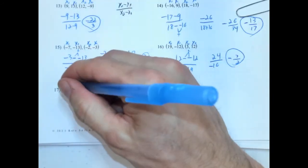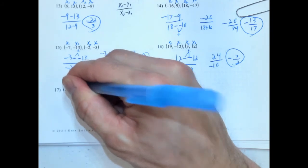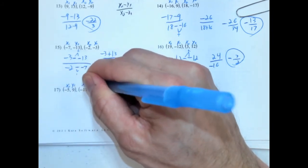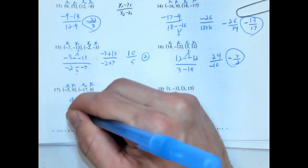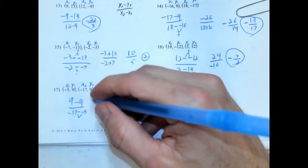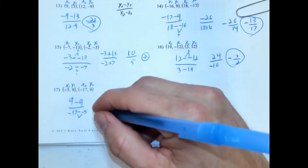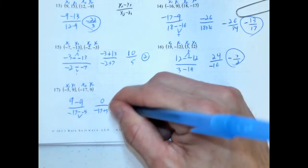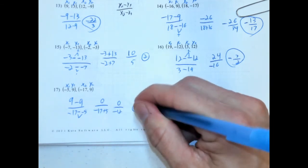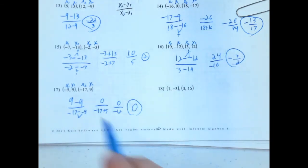These last two here. x1, y1. And then x2, y2. So 9 minus 9. And then negative 17 minus negative 5. But it doesn't really matter because we're going to get 0 on the top. So 0 divided by negative 17 plus 5. 0 over negative 12. 0 slope. You can tell because, look, the y value is not changing.